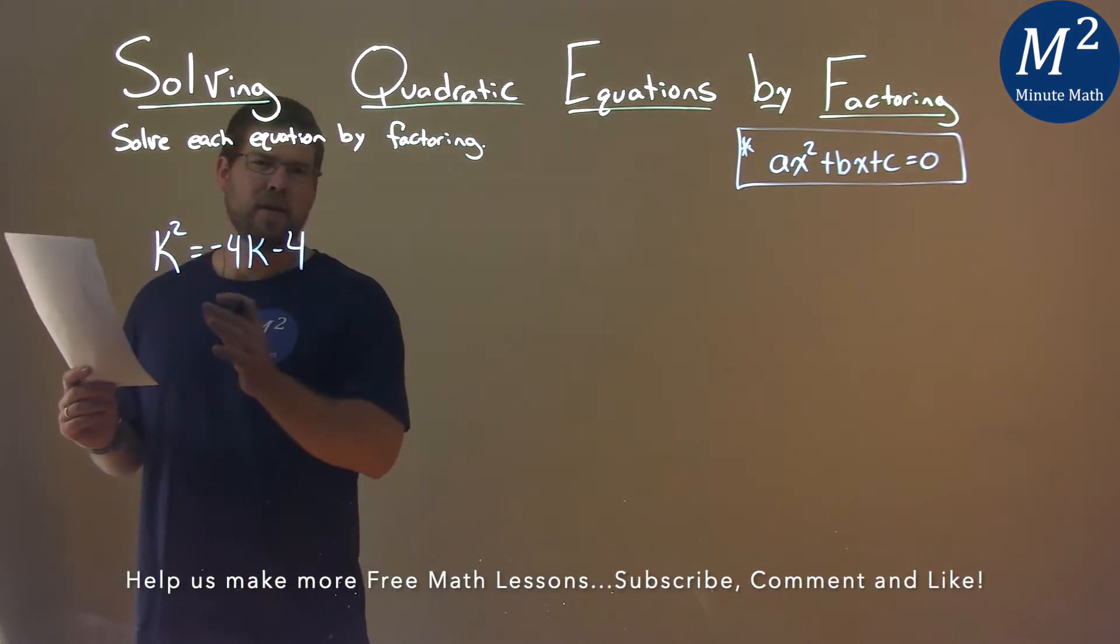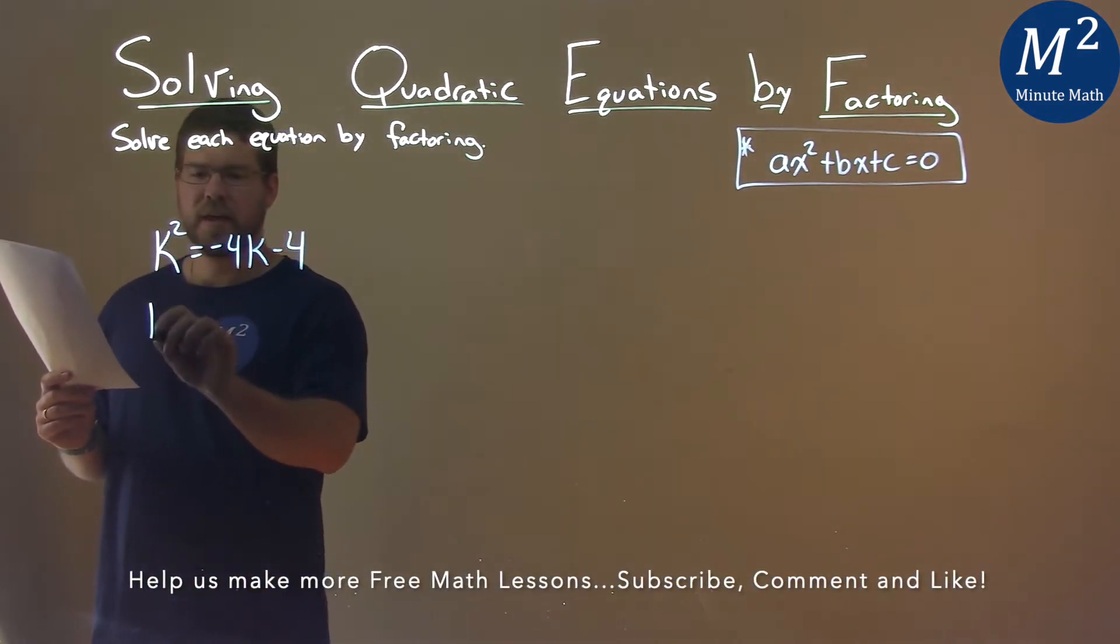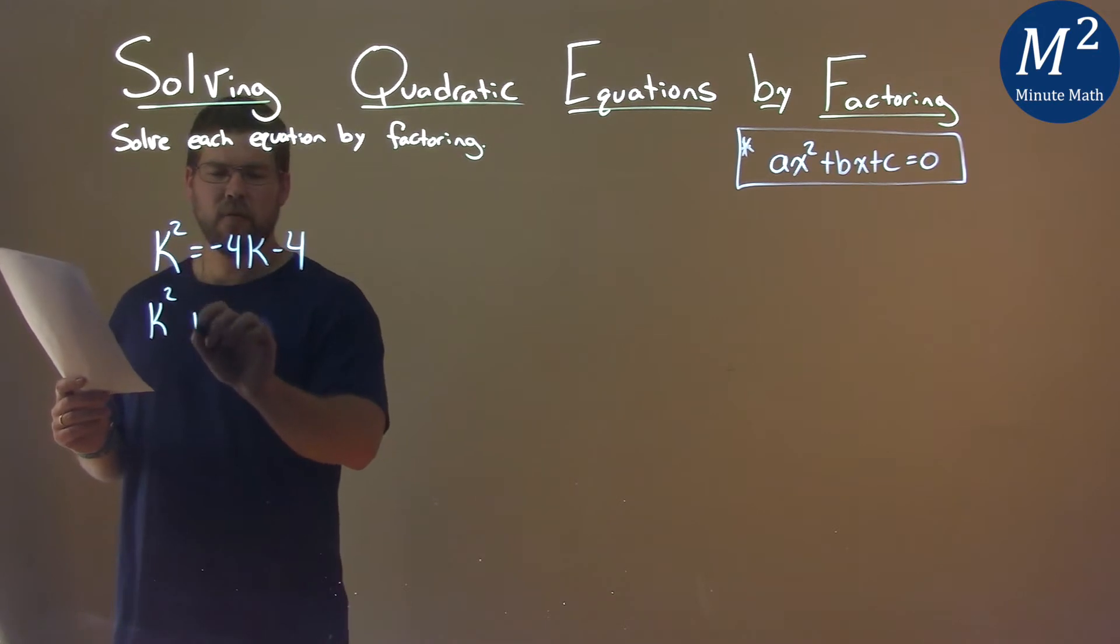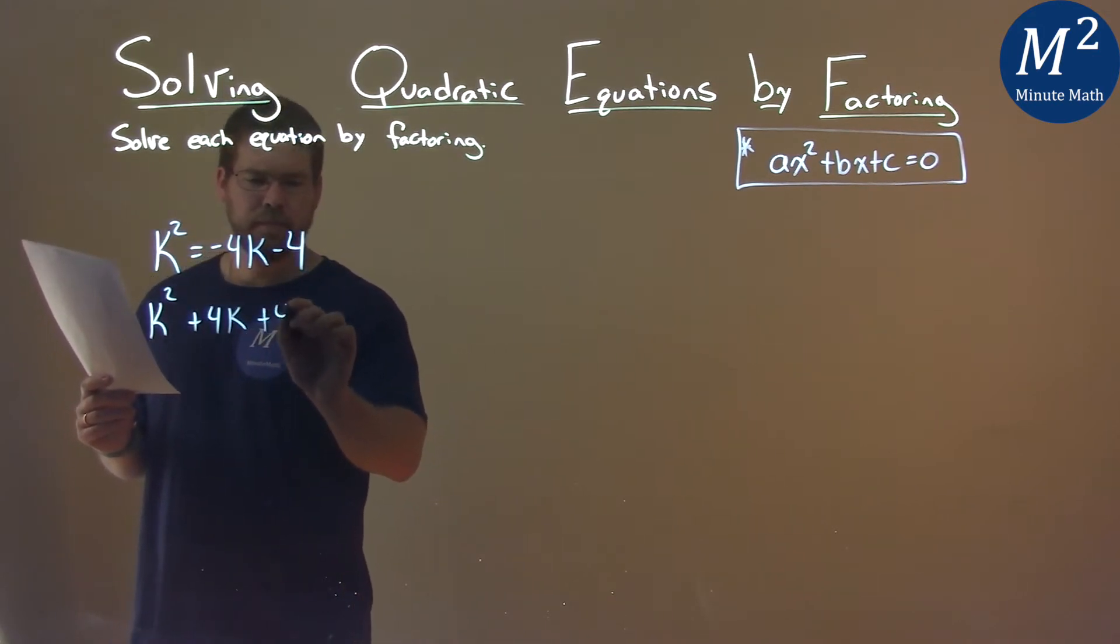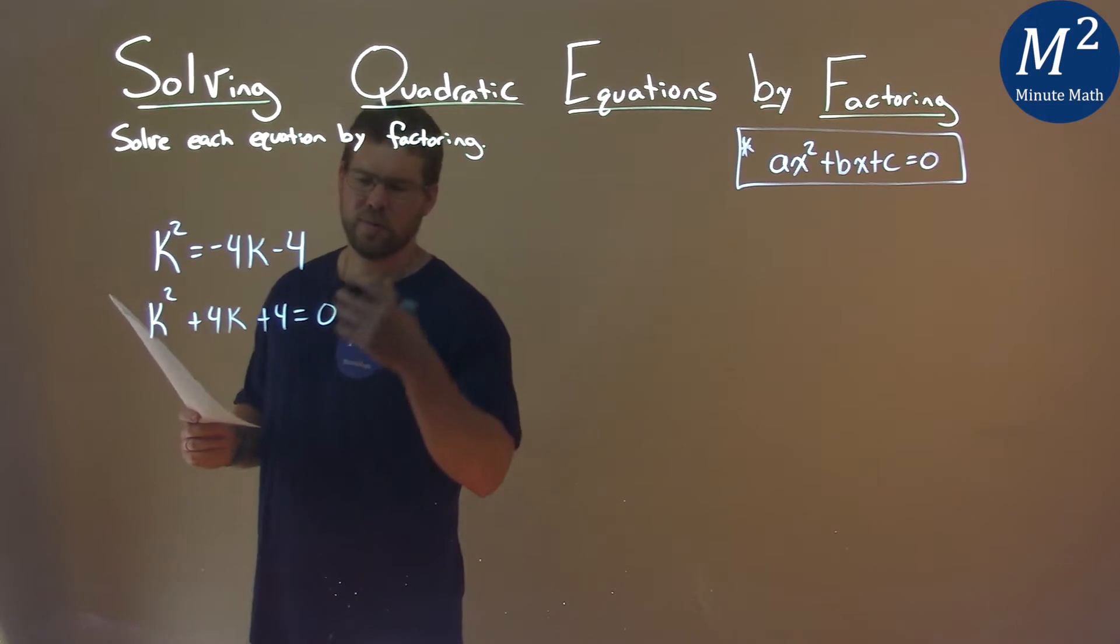Well, first thing, I'm going to try to bring everything over to the left-hand side. So I have a k squared here, but I'm going to add 4k, and I'm going to add that 4. And that leaves me equal to 0.